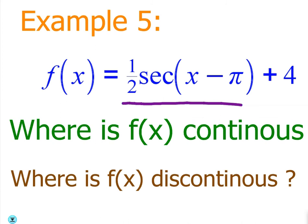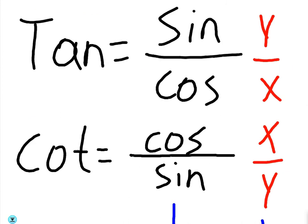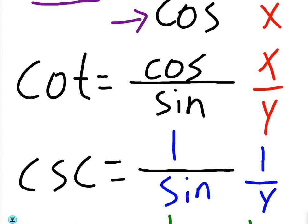One of these is secant. Let's recall some of these trig identities. Remember that tangent can be written as sine over cosine. Therefore, it has a denominator of cosine. Also remember that cotangent can be written as cosine over sine. Therefore, it has a denominator of sine.